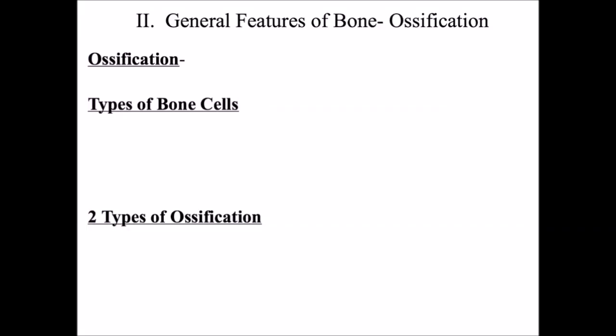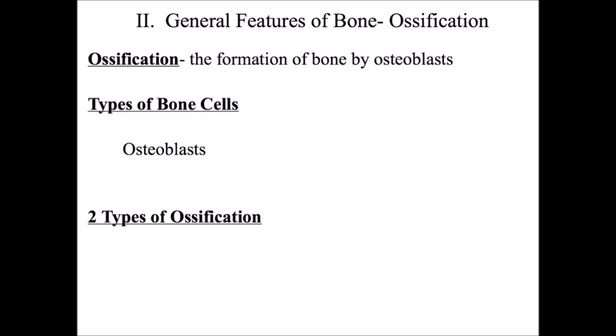Next we're going to talk about ossification, which means making bone. To make or build bone you need a special type of cell called an osteoblast. There are other cell types involved: the osteocyte, which is a mature bone cell that maintains bone; the osteoblast, which builds bone; and the osteoclast, which destroys bone.